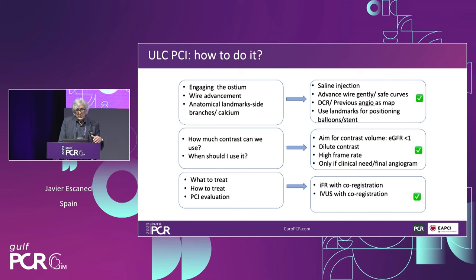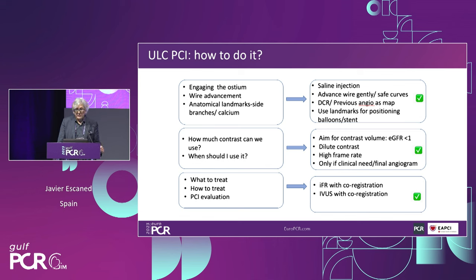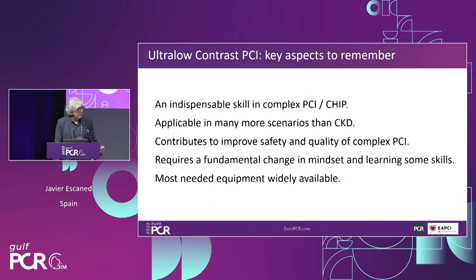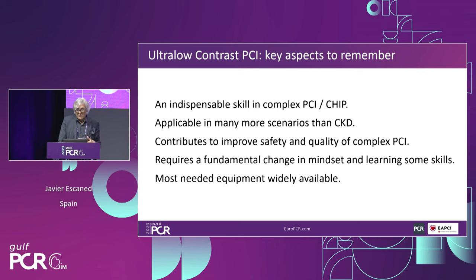A contemporary approach is to take the previous angiogram of the patient, perform functional coronary angiography to understand where the flow-limiting stenosis is, perform the intervention without contrast, double-check results with intracoronary physiology, and then perform a final injection confirming a good result with no complications. There are solutions for every step: how to engage the ostium, how to advance wires, how to identify the stenosis, how much contrast to use, when to use it, and how to evaluate the result. The key point is that ultra-low contrast PCI is an indispensable skill in complex PCI. It requires a fundamental change in mindset, but most of the equipment is already available in your cath lab.